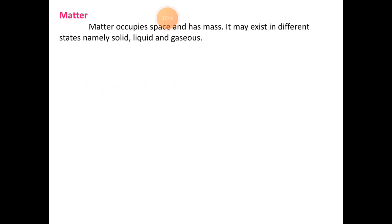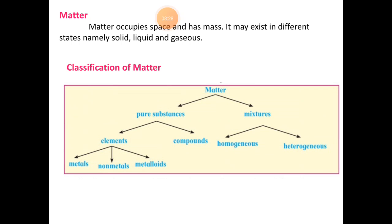Now we will look at matter. Whatever substances and things we see, we call them matter in chemistry. Matter is defined as: whatever occupies space and has mass, and exists in different states — that is matter. Matter occupies space and has mass. It exists in different states: solid, liquid, and gaseous. Now this matter we divide into different parts, which is shown in the classification table. First we saw what matter is; now we divide it into two parts.